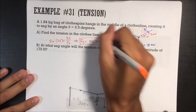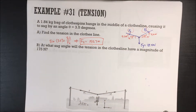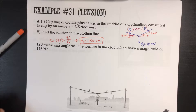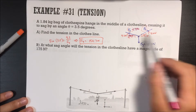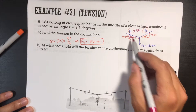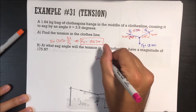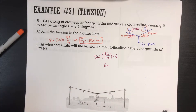At what sag angle will the tension in the clothesline have a magnitude of 175 newtons? If force of tension equals 175 newtons, the y-component still carries 9.2 newtons per side to balance gravity. Now we use inverse sine: angle equals inverse sine of opposite over hypotenuse equals inverse sine of 9.2 divided by 175, which gives us 3.01 degrees.